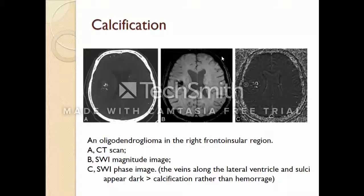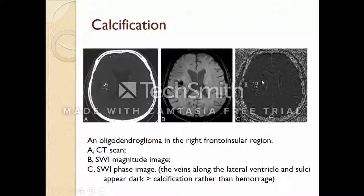So how can we differentiate these findings? The SWI phase image comes to our help. In the CT scan and the SWI magnitude scan, the tumor is visible but we still don't know its content. However, in the phase image, the veins along the lateral ventricle and sulci appear dark, and this dark appearance indicates calcification rather than hemorrhage.